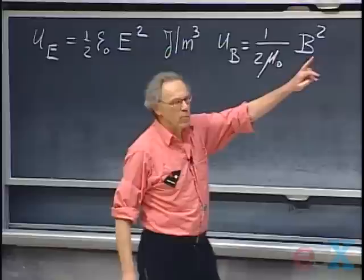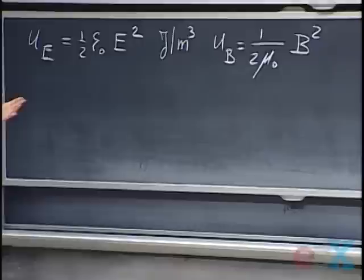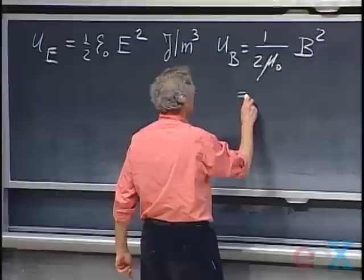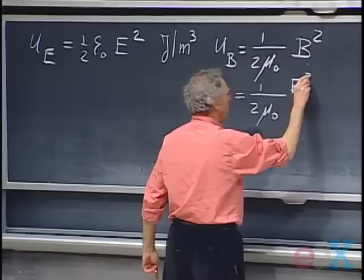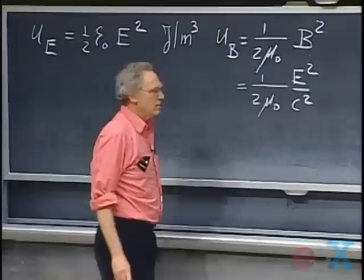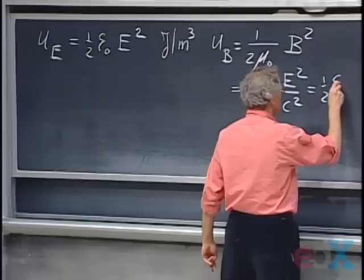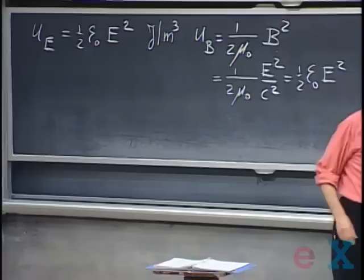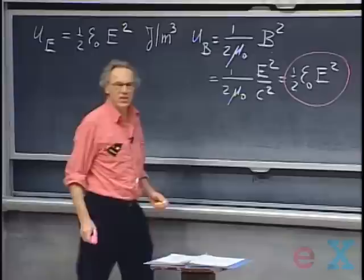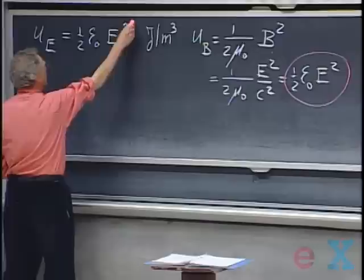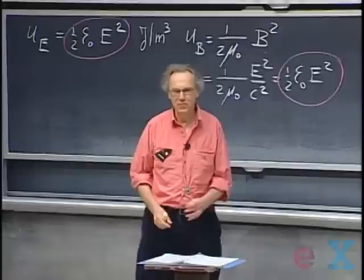When we deal with traveling waves in vacuum, at any moment in time the magnitude of B is E divided by C. So the magnetic energy density is also one over two μ₀, and I can replace B² by E² divided by C². But C² is one over ε₀μ₀, so this is also one-half ε₀E². The energy density in the magnetic field of a traveling wave is exactly the same as the energy density in the electric field.